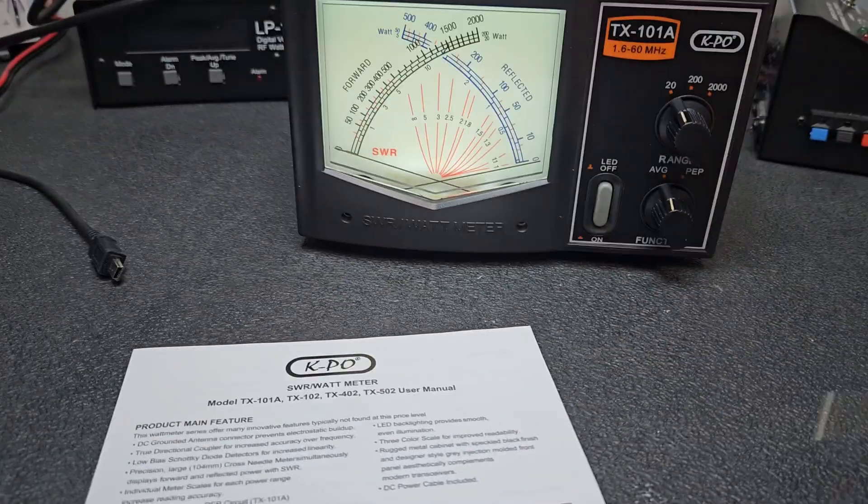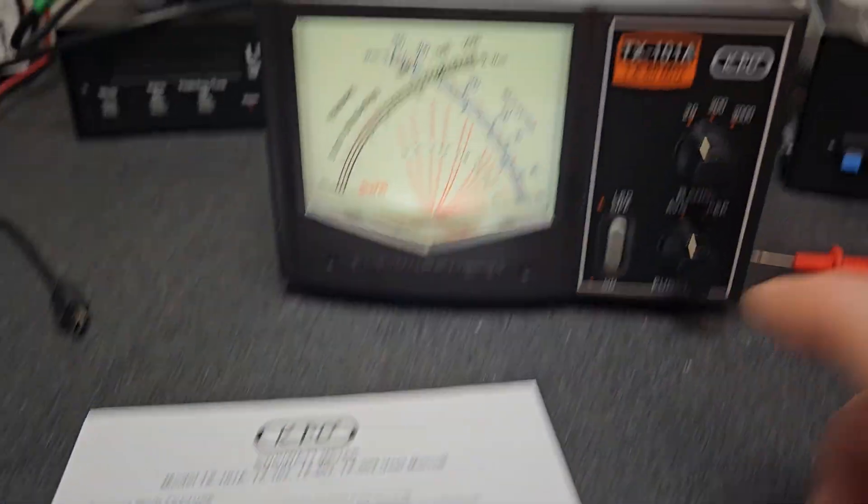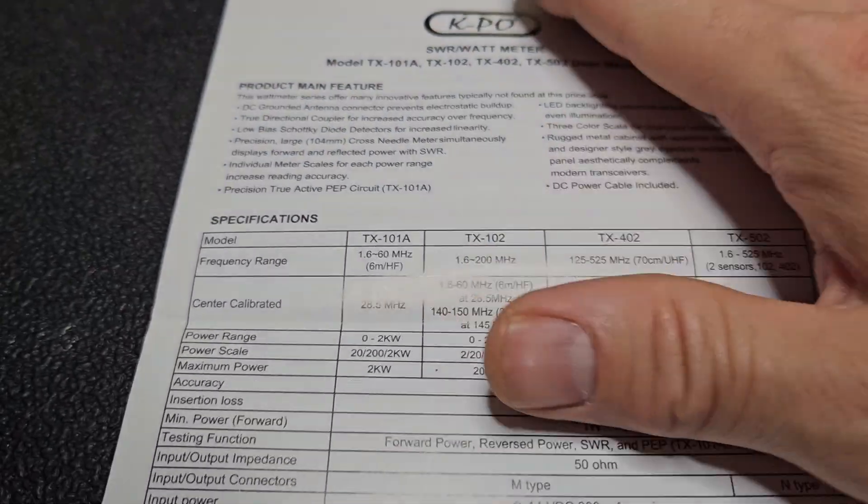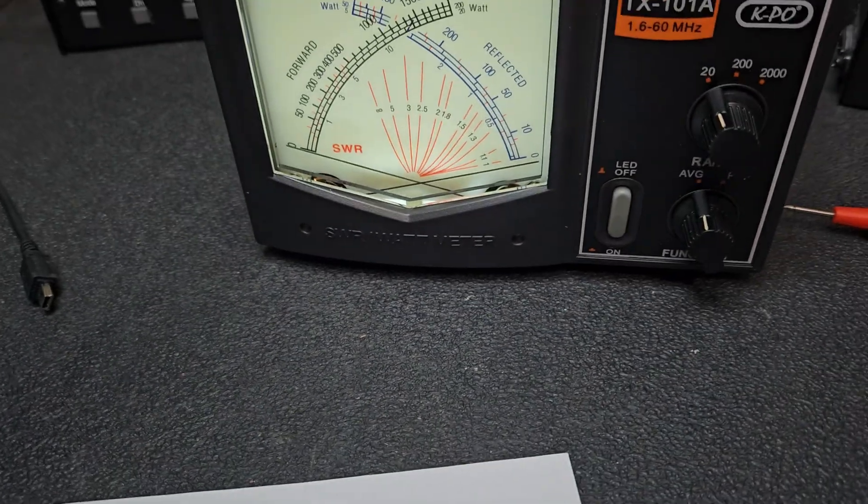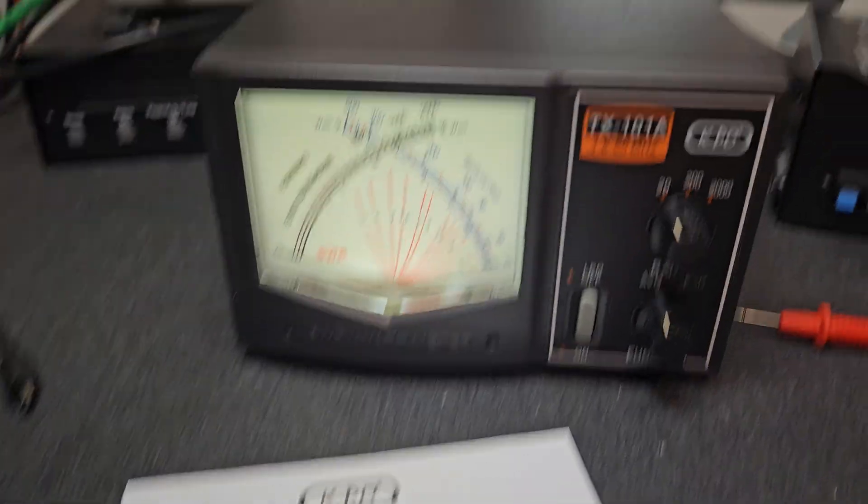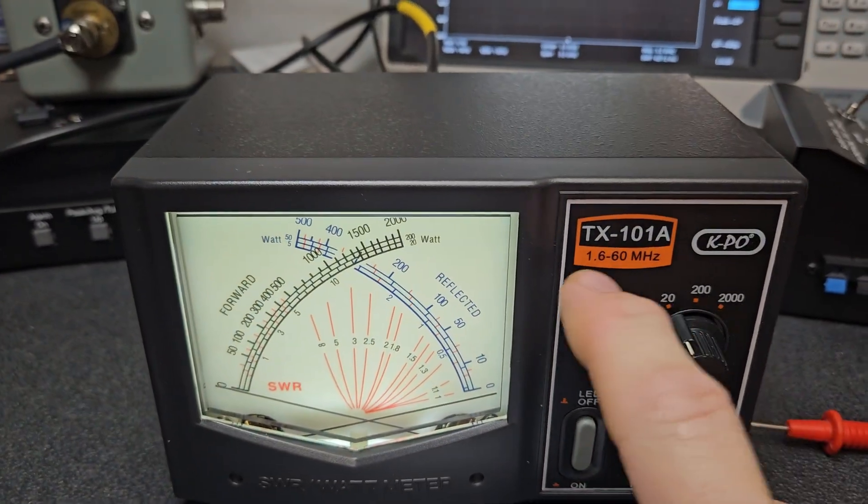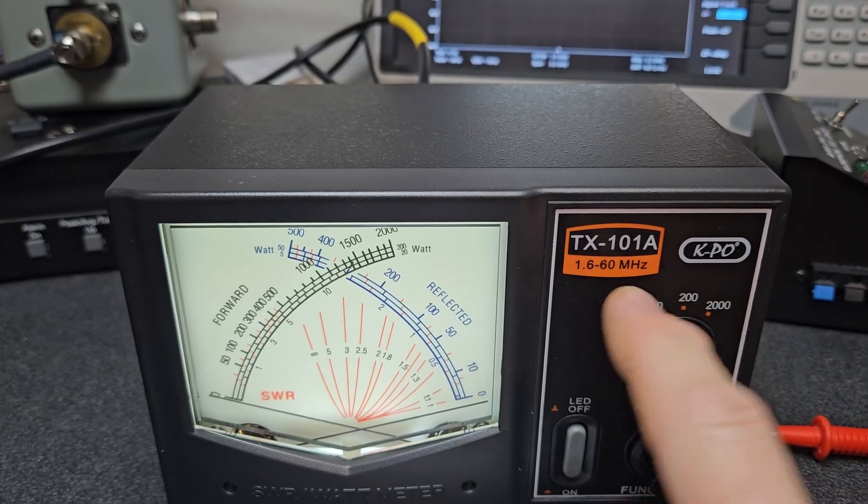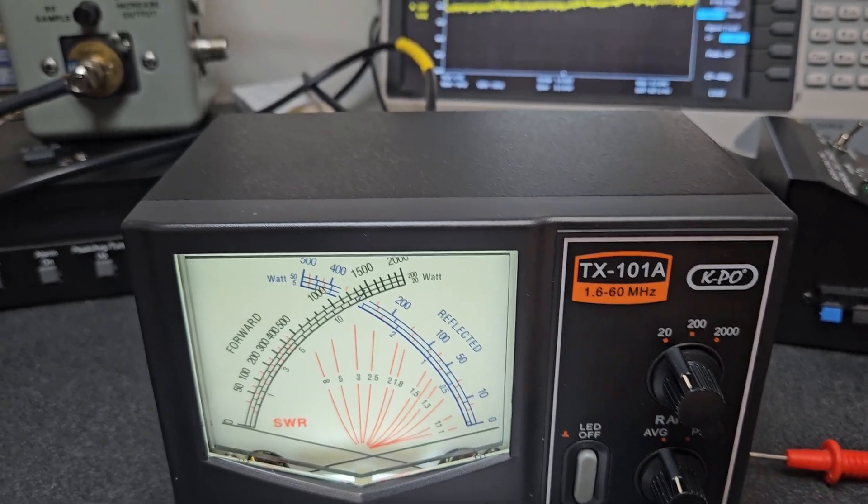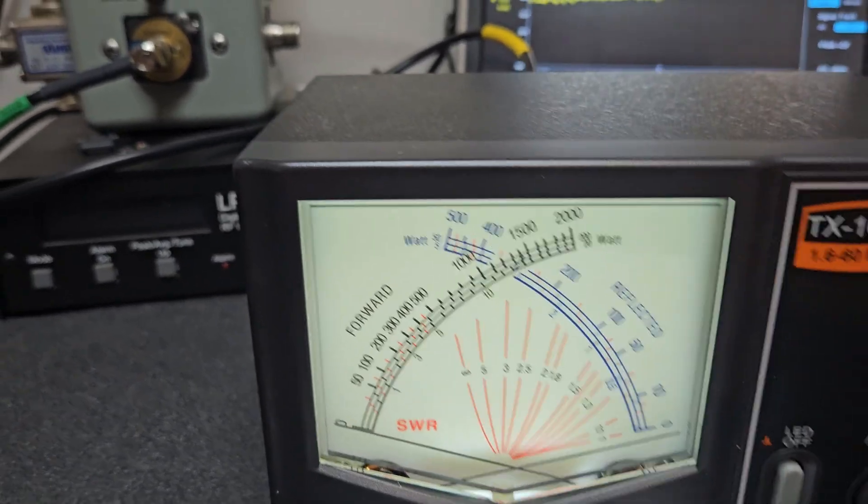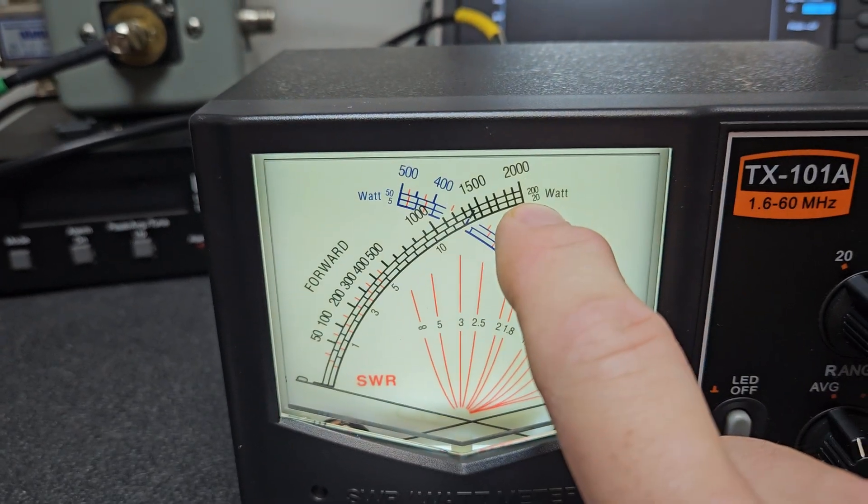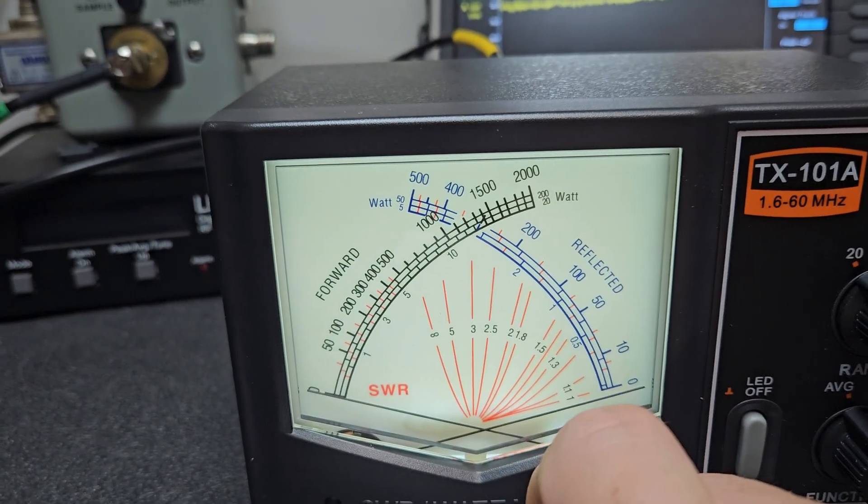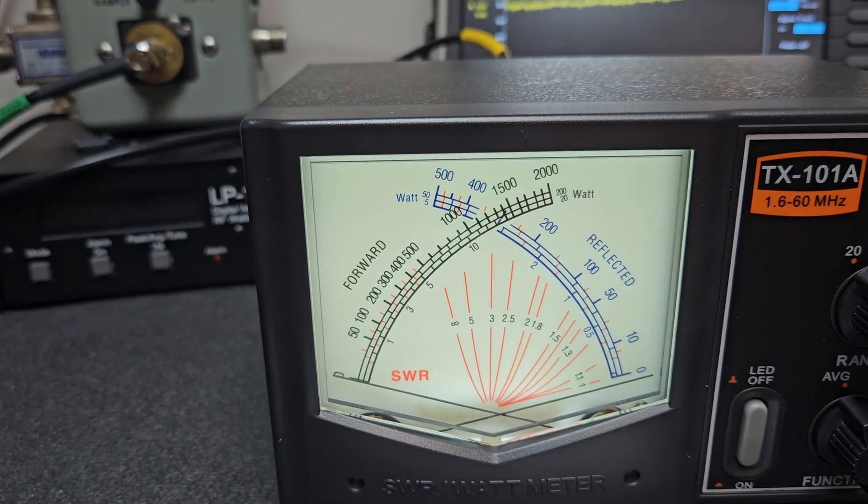This is the TX-101A. They do have various other options but I only got this one for now because I feel like most people that buy things from me are going to operate between this frequency and this frequency. You have 20, 200, and 2000 watt scales. The 20 watt scale is the very bottom, the 200 is the middle, and the 2000 is the top.